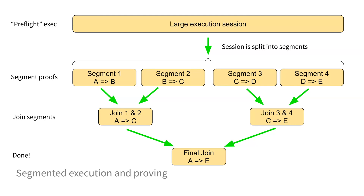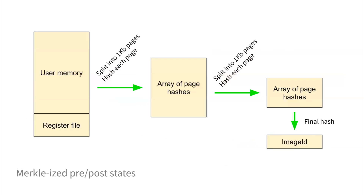We want to make sure that we're always going from A to B, B to C, C to D, D to E. So what is the image ID? It's basically the root hash of a Merkle tree.